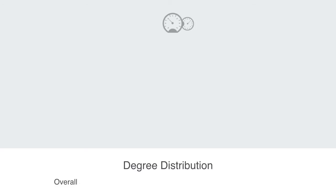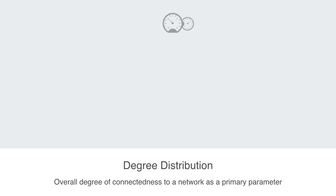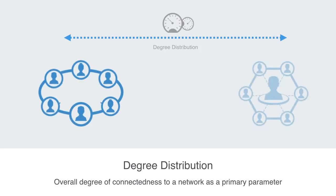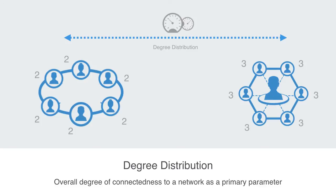In the last section of the course, we were really looking at the overall degree of connectivity to a network as a primary parameter. When we turned it up or down, it worked to integrate or disintegrate the entire network. The key parameter we will be exploring in this section is a network's degree of distribution. Degree distribution tries to capture the difference in the degree of connectivity between nodes in a graph.